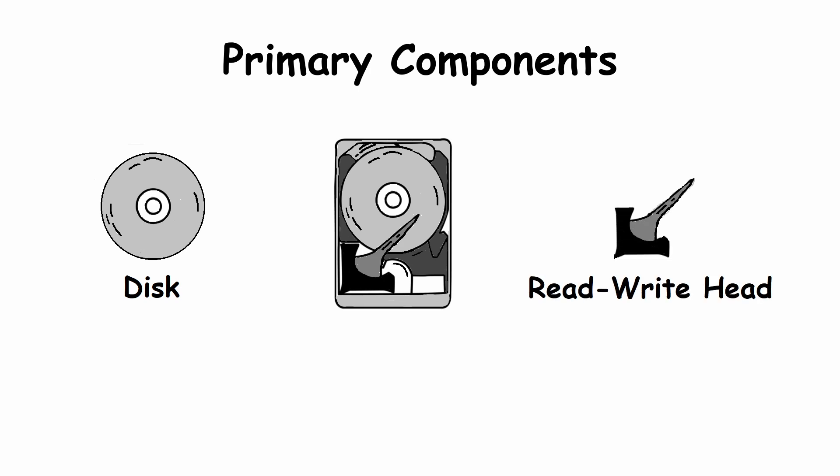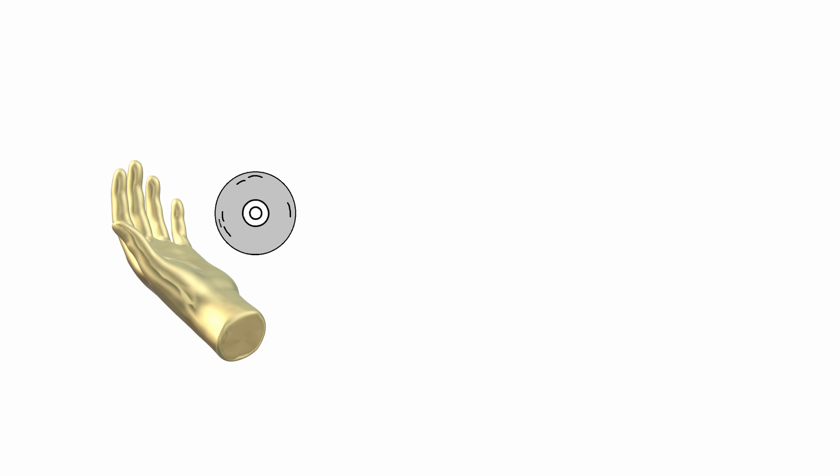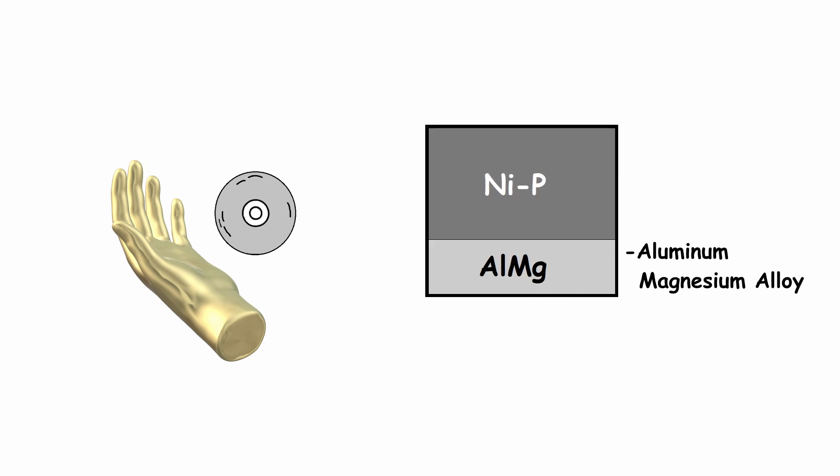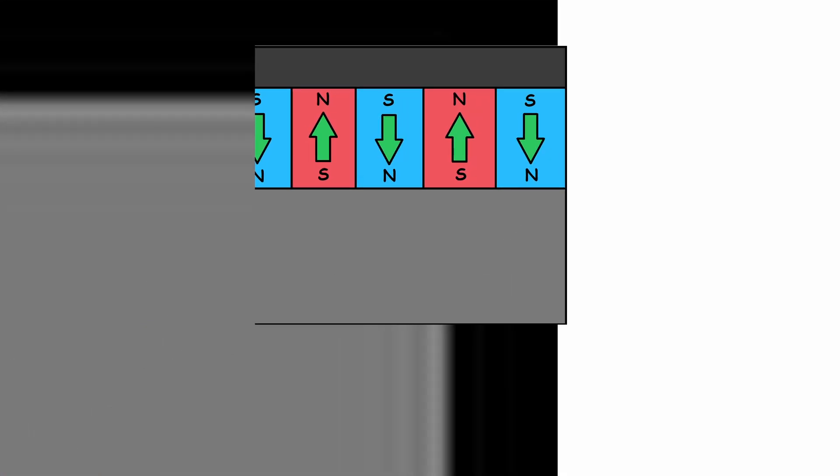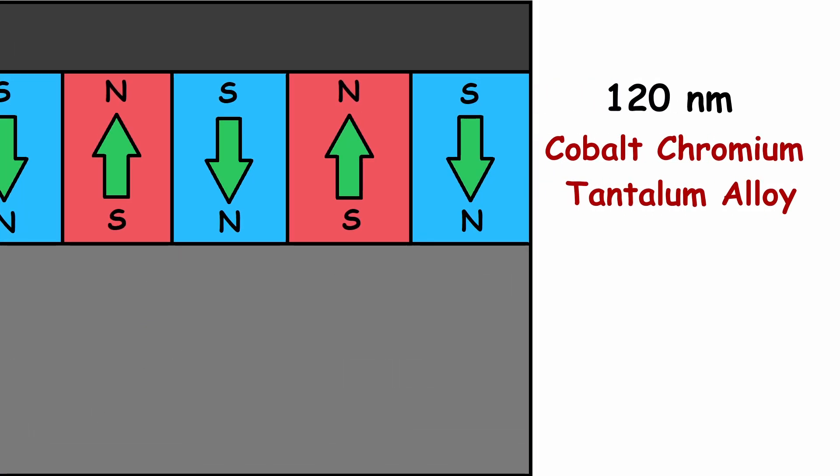But how exactly is it able to store so much information in such a limited amount of space? Well, the primary components of every hard disk drive are a small metallic disk and a read write head, which are analogous to a vinyl record and the needle of the record player. The disk is small enough to fit in the palm of your hand, and it's made of aluminum magnesium alloy along with other alloys, but where the magic happens is within a 120 nanometer thin layer of cobalt tantalum alloy that serves as the magnetic functional layer.